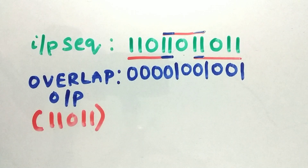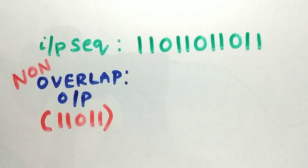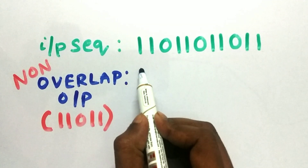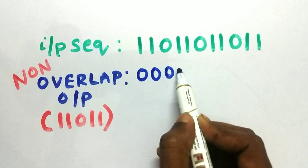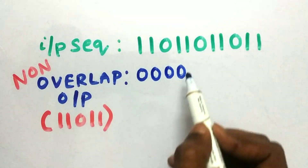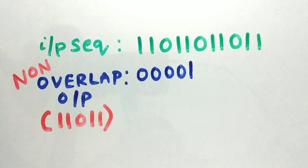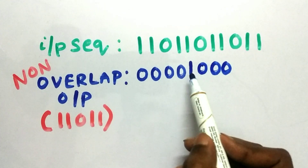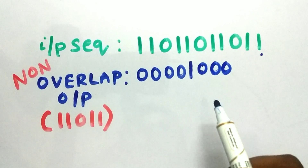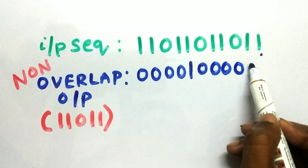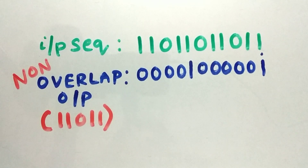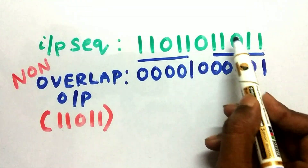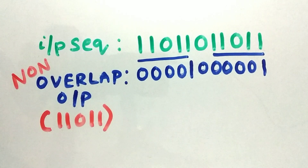Now let's look at the non-overlap output for the same pattern and the same input sequence. As we get the first bit the output is 0, and for the second, third, and fourth bits also, but at the fifth bit we get our pattern 11011 so the output will be high. Since it's a non-overlap case, we cannot use the previous bits for the next sequence, so we need to search again from here. We get zeros as output until we find the pattern at the last bit. We are able to detect the pattern twice in this sequence using the non-overlap case, because the overlapping pattern is neglected — we don't want any pattern bits to be reused for the next pattern.